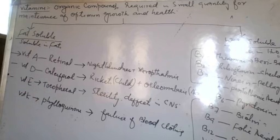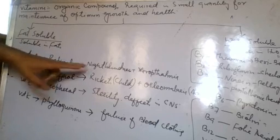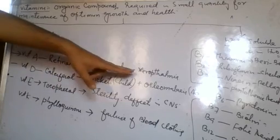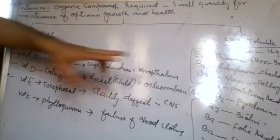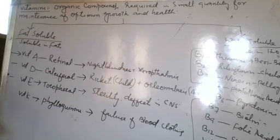If there is a deficiency of any of these vitamins, deficiency diseases develop in our body. Vitamin A deficiency mainly affects our eyes, causing night blindness where we are not able to see properly during the night, and xerophthalmia, which involves bulging of the eyes.